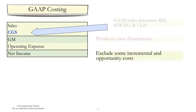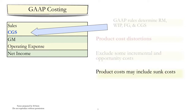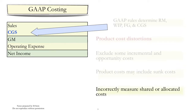For example, GAAP excludes some incremental and opportunity costs. Product costs may include irrelevant sunk costs. GAAP may result in incorrectly measured, shared, or allocated costs.